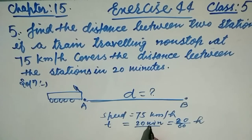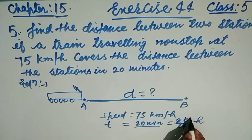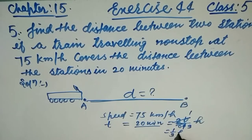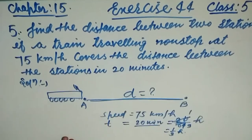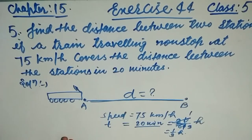20 divided by 60 simplifies — the zeros cancel — giving us 20/60 = 1/3. That means the time is one-third of an hour.